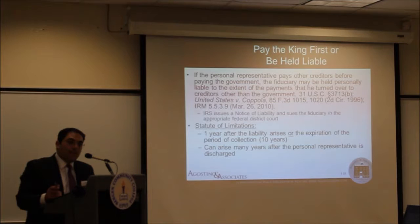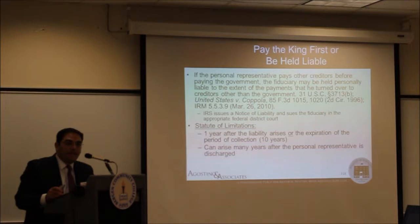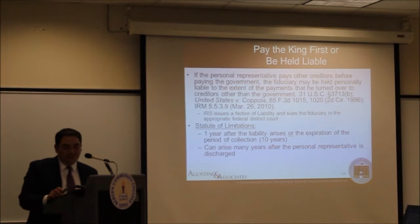If the personal representative pays other creditors before paying the government, that fiduciary can be held personally liable to the extent of those payments. The difference between a personal representative and an executor is the state in which the will is probated — some states like Florida use the modern term personal representative, others use executor. As for whether a court order directing payment to a particular creditor before the IRS holds weight — it probably holds some weight, but not a whole lot.